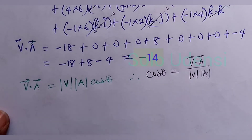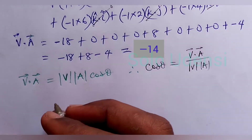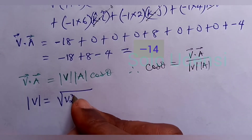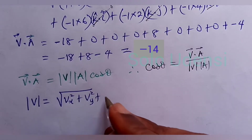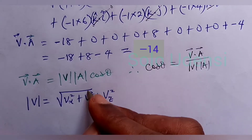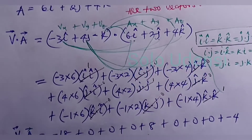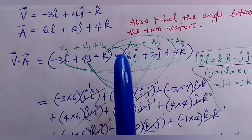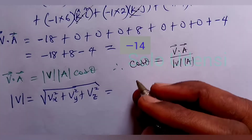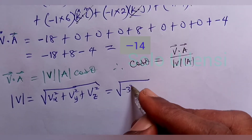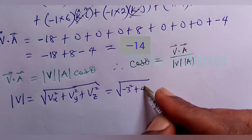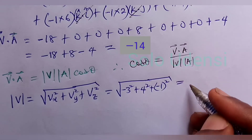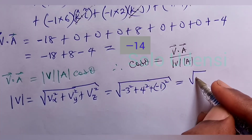What we now find is the magnitude of V, equal to the square root of VX squared plus VY squared plus VZ squared. That is the square root of (minus 3) squared plus 4 squared plus (minus 1) squared, which gives us the square root of 26.